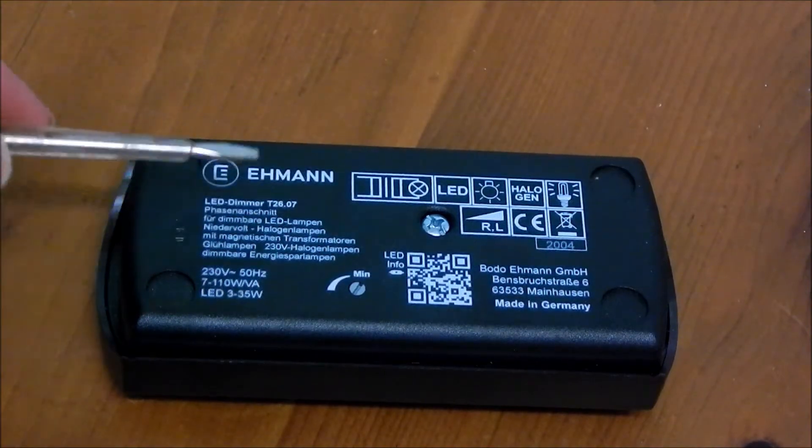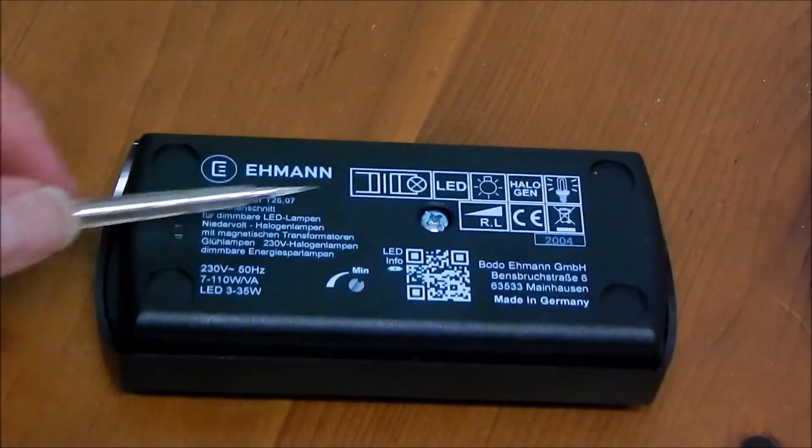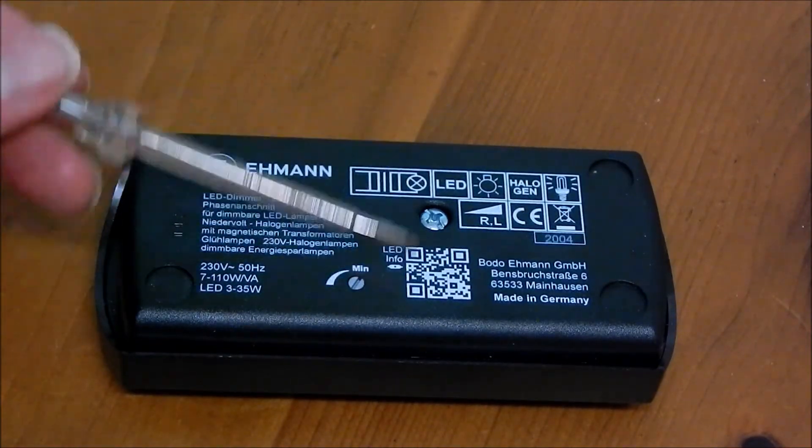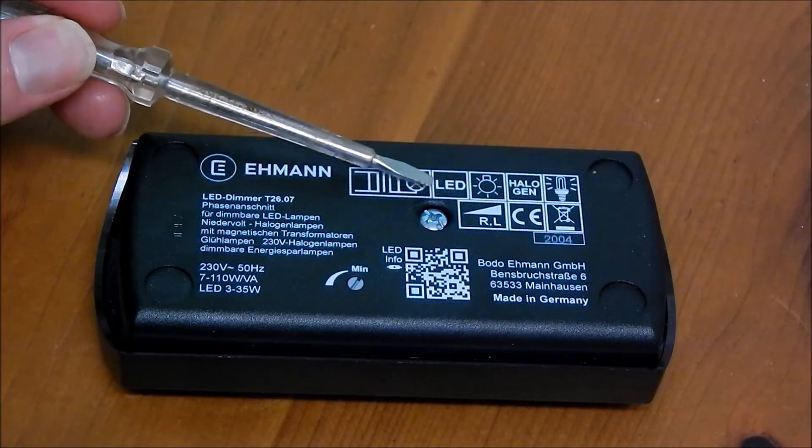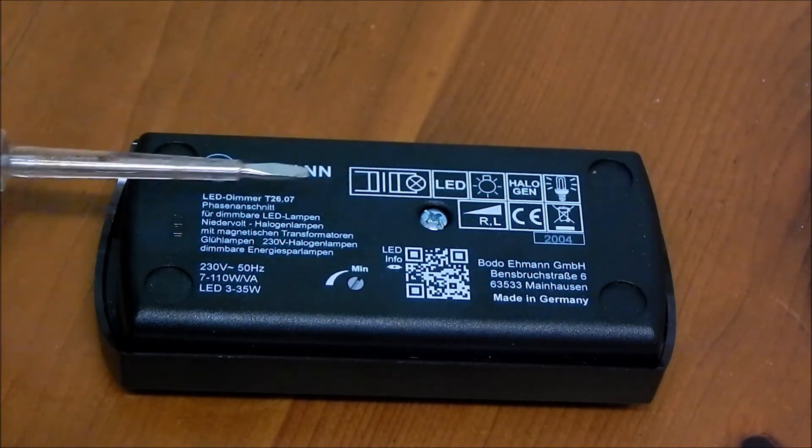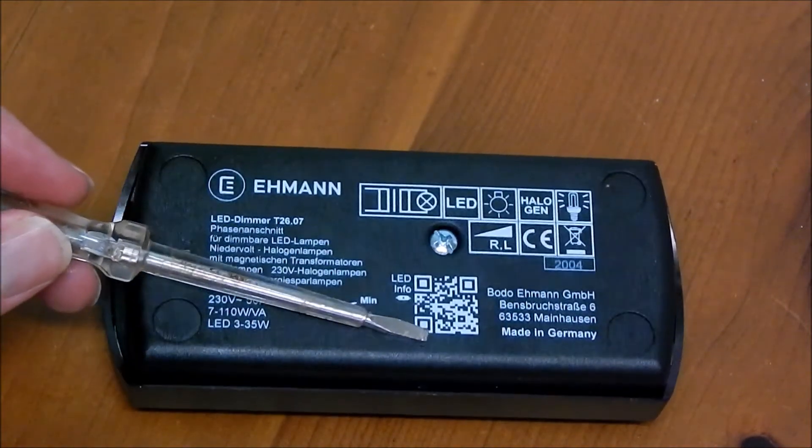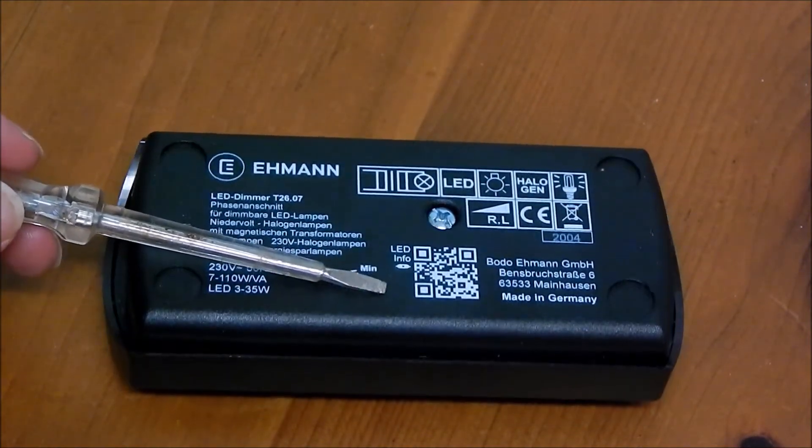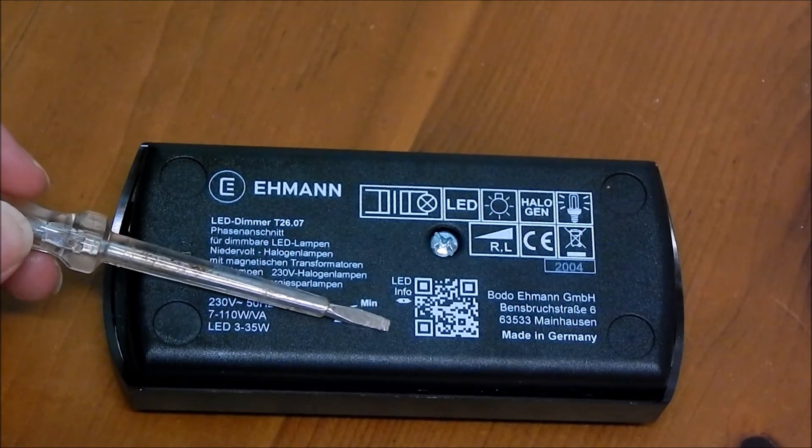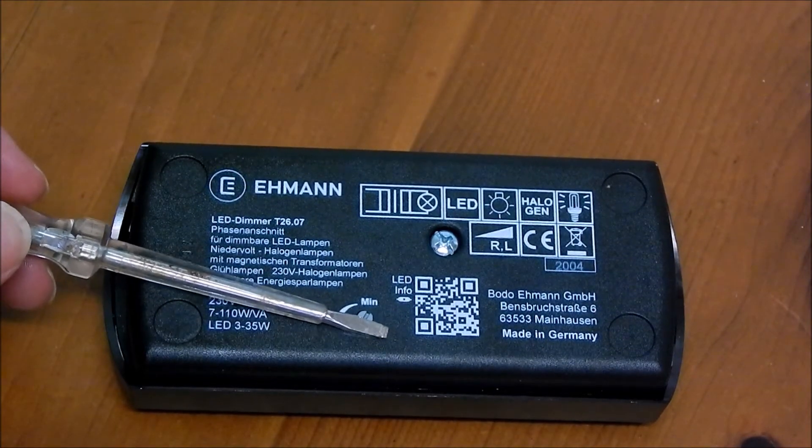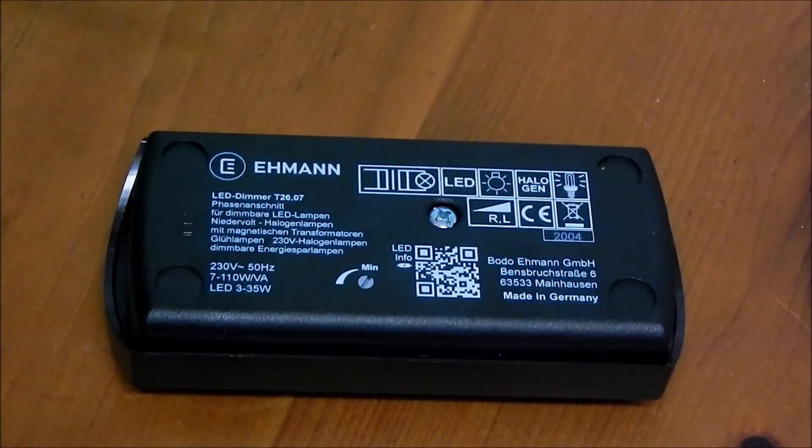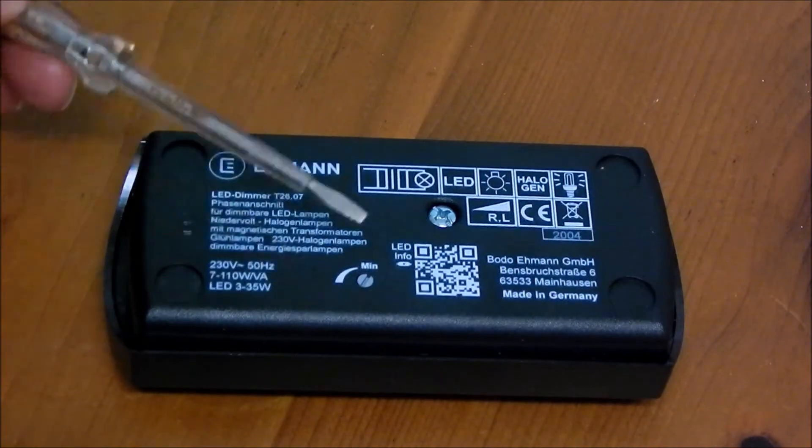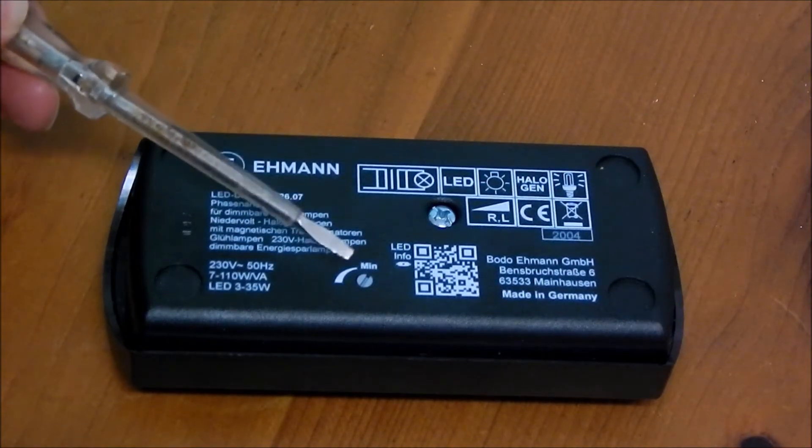Just before I open up the dimmer, a couple of important things to point out on the back of it. First, you've got confirmation that it is LED rated. Second, very helpfully, there's a little QR code you can scan that links to the manufacturer's website and gives you the compatibility of the dimmer with various lamps. So I've already checked the lamp I've purchased is suitable for this dimmer. Always worth doing that before you buy the lamps.